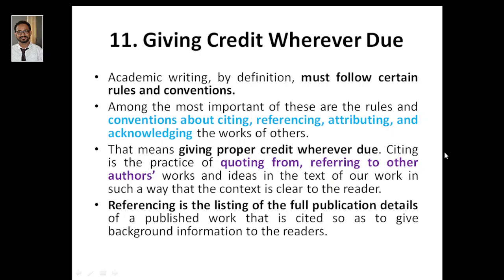Usually, acknowledgement, citing, and referencing are present in every research article and publication. Every publication will include citing and referencing, whether it is your review paper, a journal paper, a book chapter, a book, or it may be your thesis — a master's thesis, engineering thesis, or PhD thesis. Whereas acknowledgement is a key element in its own right.